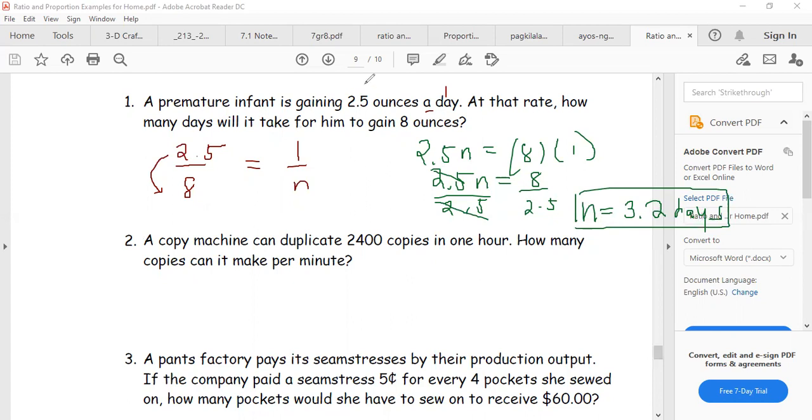Next, what about number two? A copy machine can duplicate 2,400 copies in one hour. How many copies can it make per minute? A copy machine can duplicate 2,400 copies in one hour. One hour. And then, how many copies, ito yung nawawala, can it make per minute? So minute yung nawawala dito. So per minute, ibig sabihin per one minute yun.